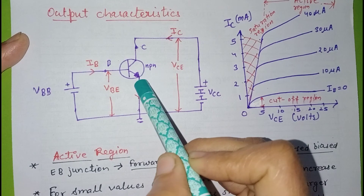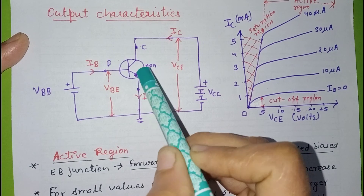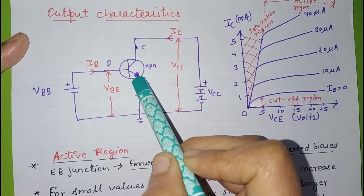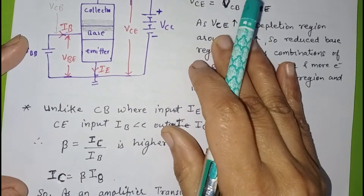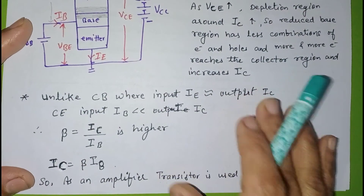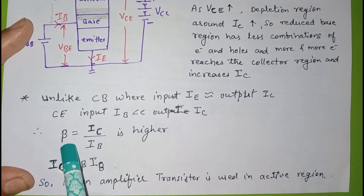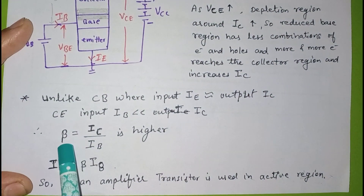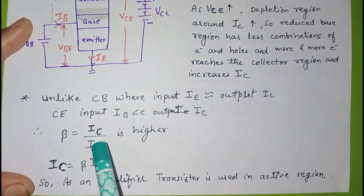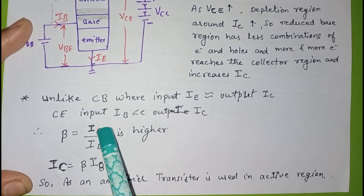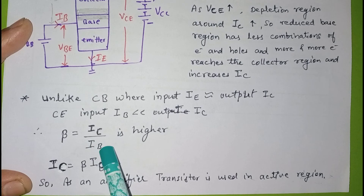The current amplification factor of the common emitter configuration is represented by beta (β). It is defined as IC divided by IB, and it has a high value because IC is much greater than IB.